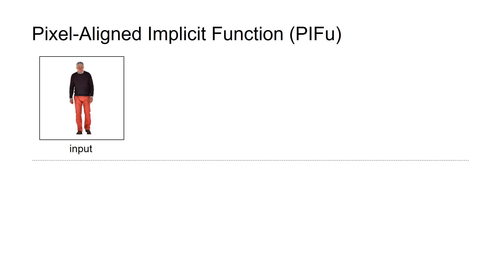Based on these insights, we present Pixel-aligned Implicit Function, or PIFU — a highly effective implicit 3D surface representation that is spatially aligned to the input image.